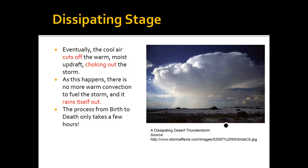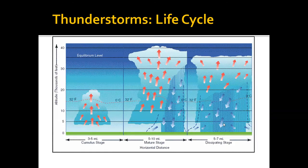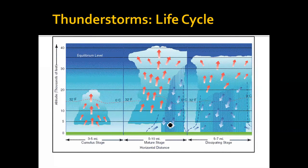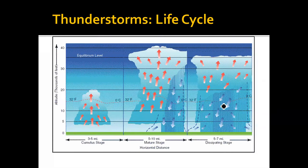So this is the thunderstorm life cycle: warm rising air in the cumulus stage; once that air reaches the top of the troposphere it spreads outward forming an anvil-like shape; at the same time, cool air is descending into the thunderstorm, allowing rain to fall — this marks the beginning of the mature stage; eventually the cool air cuts off the warm air and the thunderstorm falls apart. The whole process takes just a few hours.